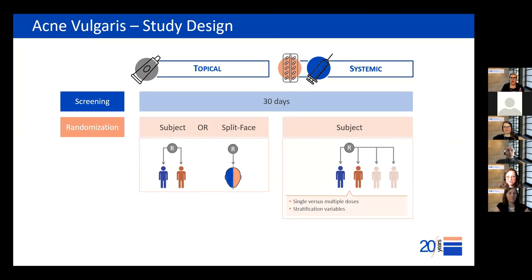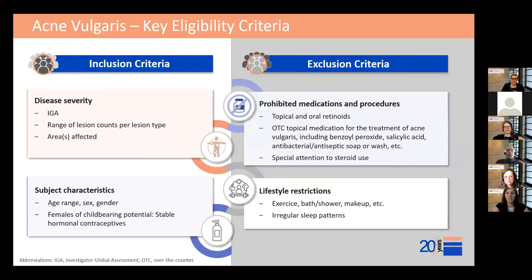Because of these localized lesions, there are interesting study design options for topical treatments — including a split-face intra-patient randomization where one half of the face is treated with the vehicle and the other half with the study drug. When treating a small area, we must think about special protocol considerations when writing the limitations on the type and quantity of assessments. For disease severity eligibility criteria, we use IGA and lesion counts — always specifying the type, range, and area, for example 'facial acne vulgaris with 20 to 50 inflammatory lesions at Day 1.' For a split-face design, we also want to ensure symmetry between both sides.